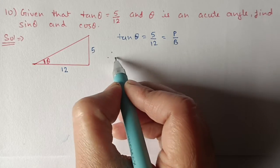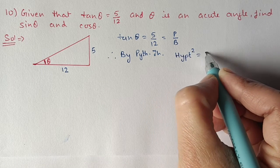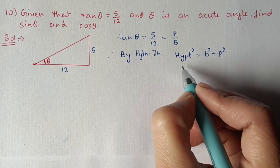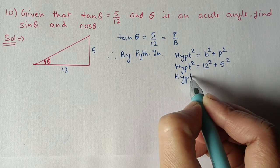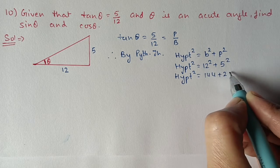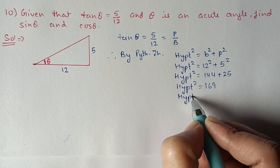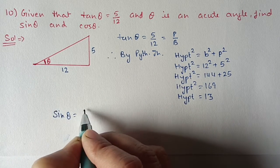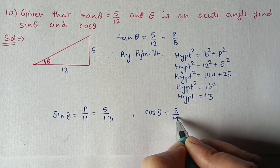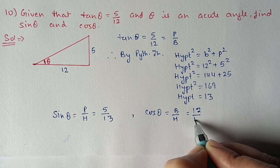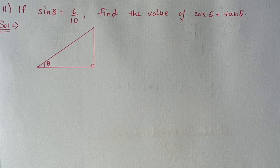By Pythagoras theorem: hypotenuse square equals base square plus perpendicular square. Base is 12 and perpendicular is 5. So 12 squared is 144 and 5 squared is 25, giving hypotenuse square equal to 169, which is 13 squared. So hypotenuse is 13. First, sin θ equals perpendicular by hypotenuse, which is 5 upon 13. Second, cos θ equals base upon hypotenuse, which is 12 upon 13.